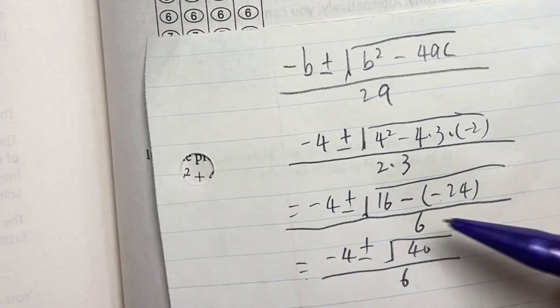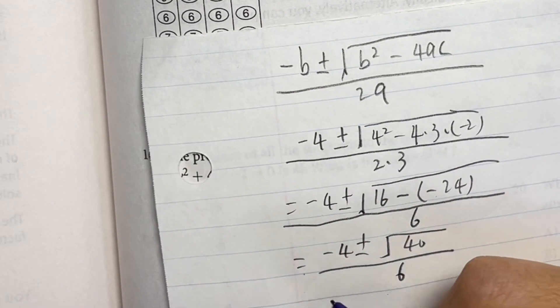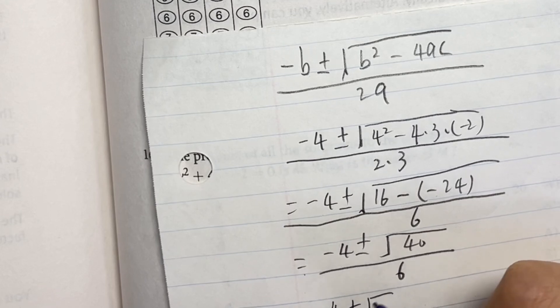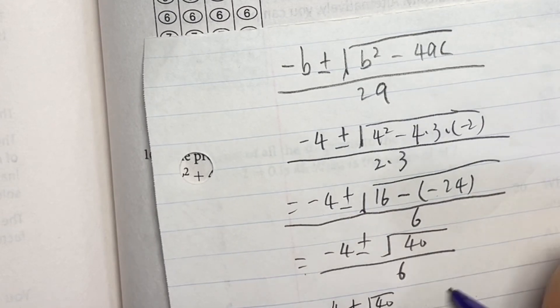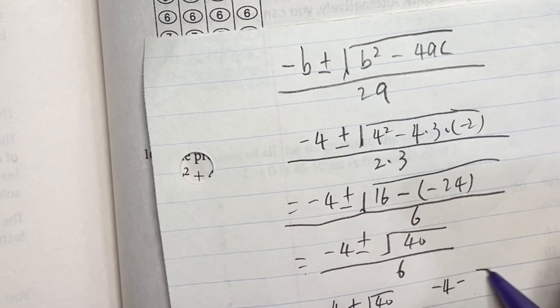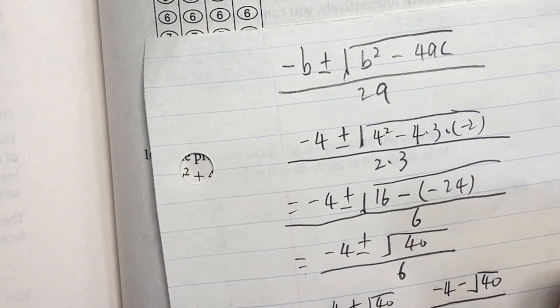Now we have two solutions: -4 + √40 divided by 6 and -4 - √40 divided by 6.